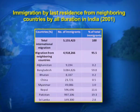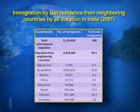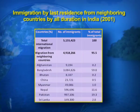Looking at the tabular view of international migrants: migration from neighboring countries was 95.5 percent in total. The breakdown by country shows Afghanistan at 0.2 percent, Bangladesh with the maximum at around 60 percent, Bhutan at 0.2 percent, China at 0.5 percent, Myanmar at 0.1 percent, Nepal at 11.6 percent, Pakistan at 19.3 percent, and Sri Lanka at 2.8 percent.